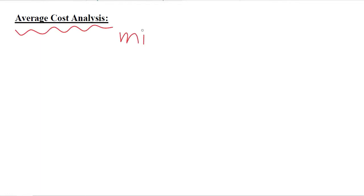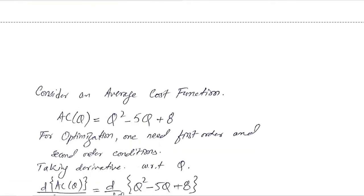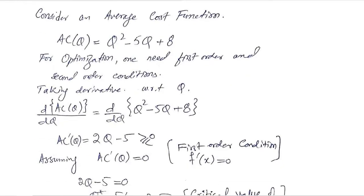In this video we will apply the tool of optimization on the average cost. We will try to analyze the average cost and achieve its minimum by using the first order condition and second order condition wherever necessary. We are starting with a numerical instance of an average cost function.